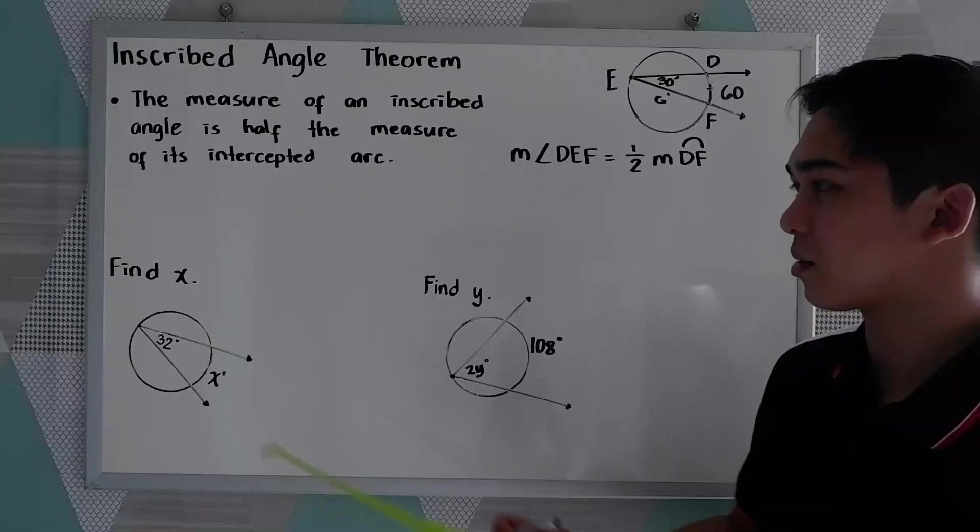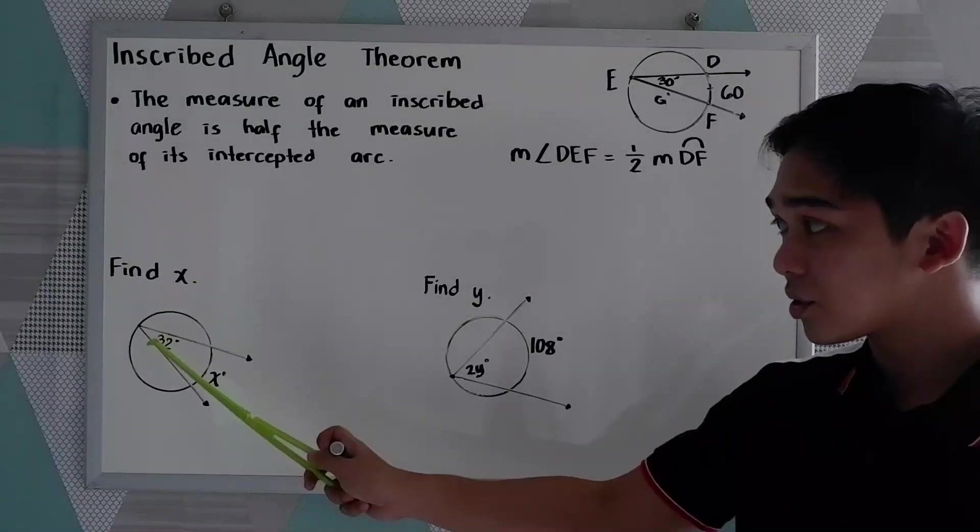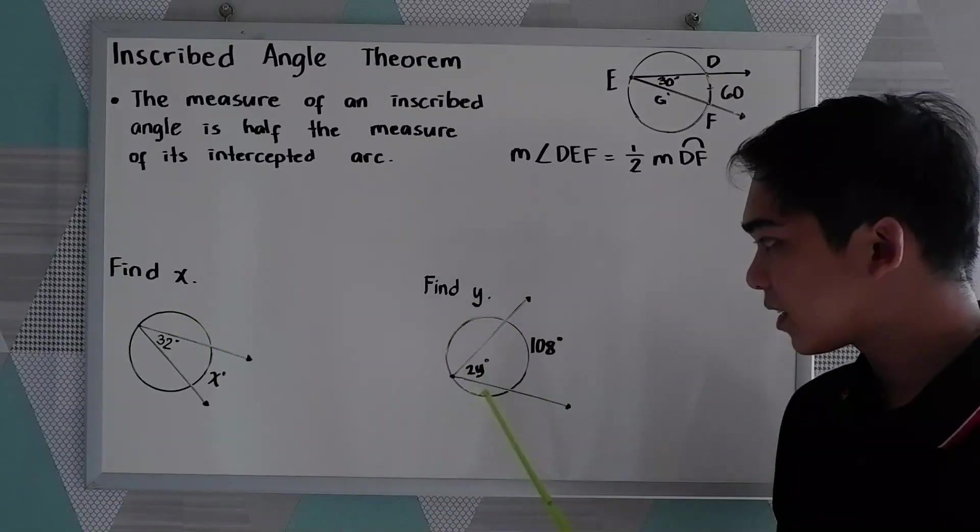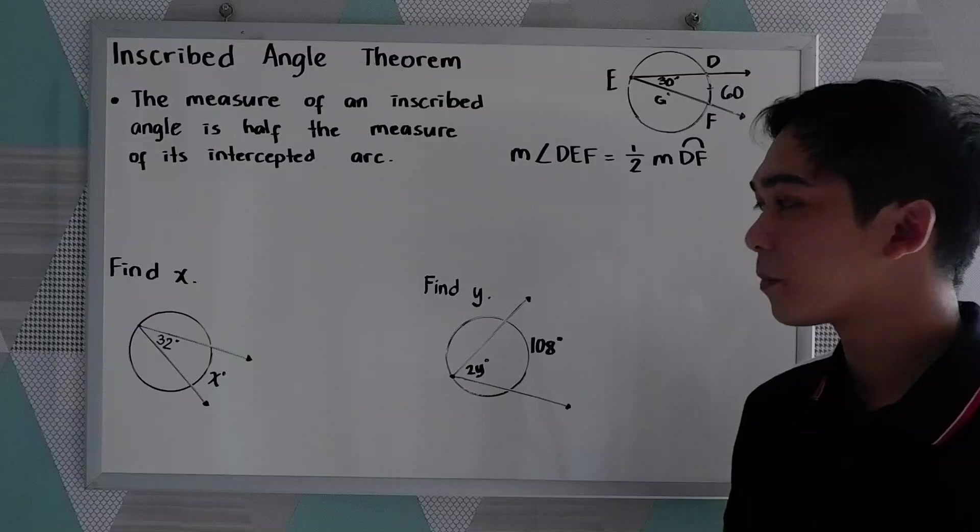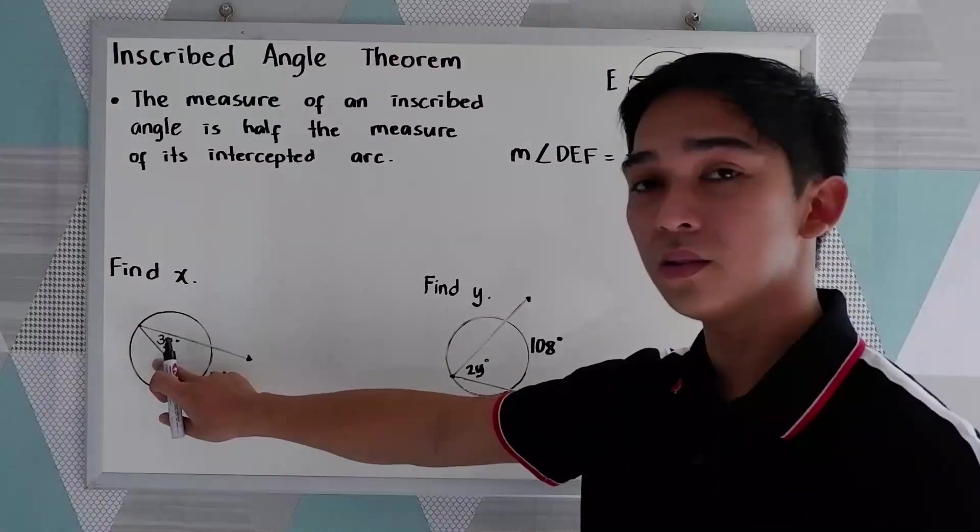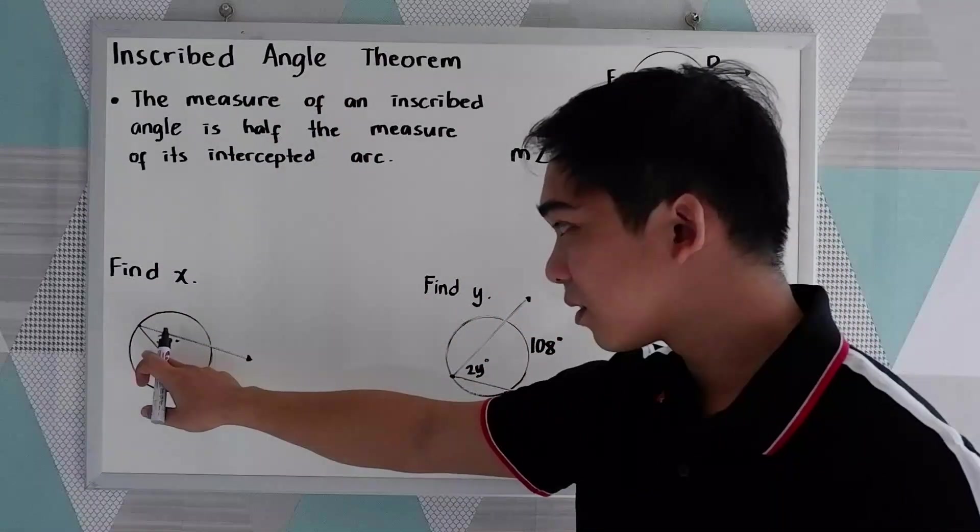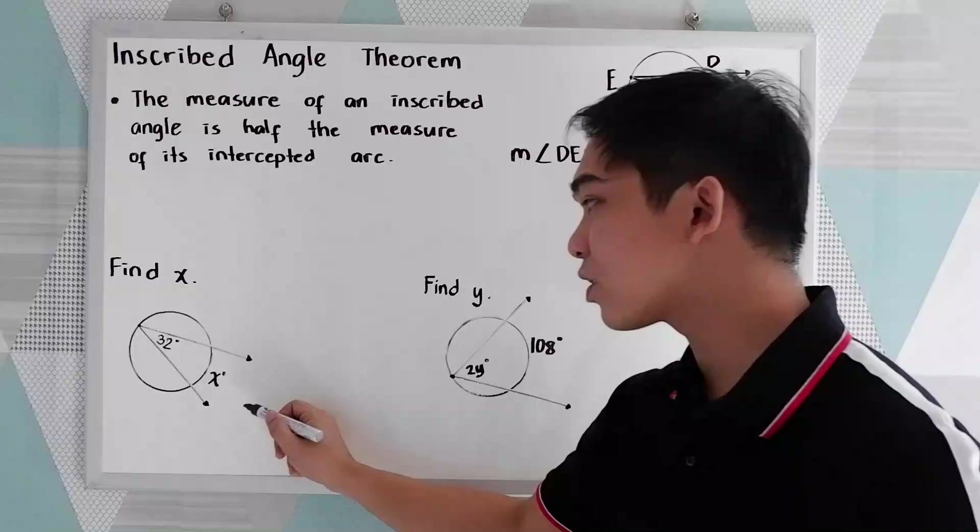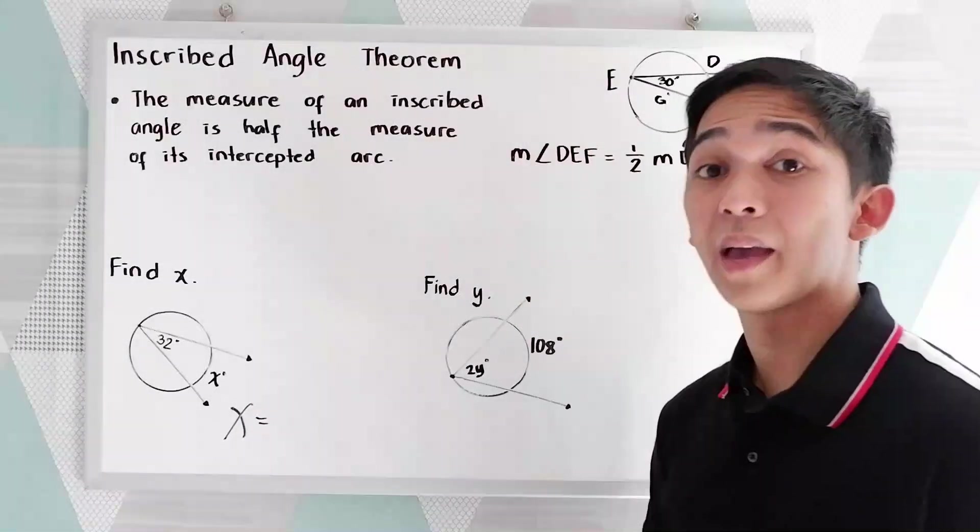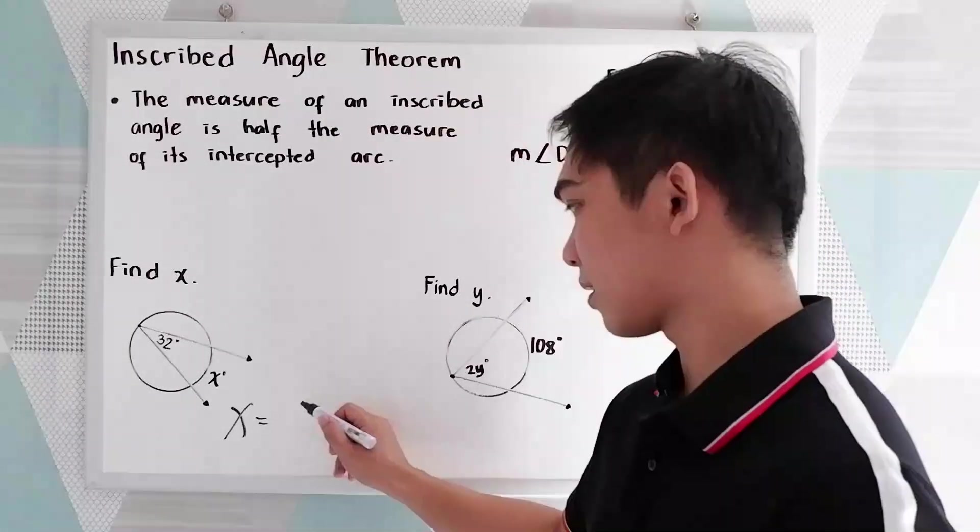Let's have the following examples. Our first example is Find X using this illustration. And, the second one is Find Y using this second illustration. Let's find X. Following our theorem, X will be times 2. So, 32 times 2, that is 64.